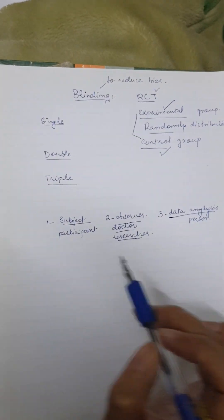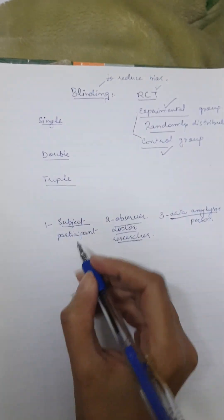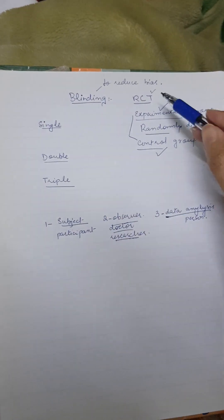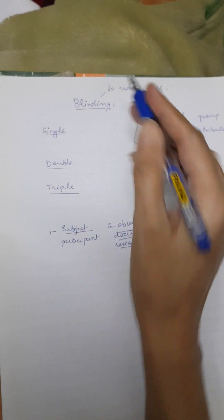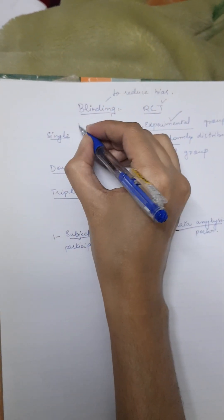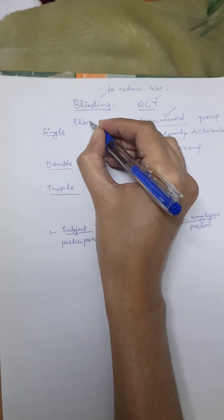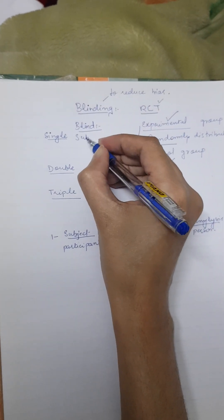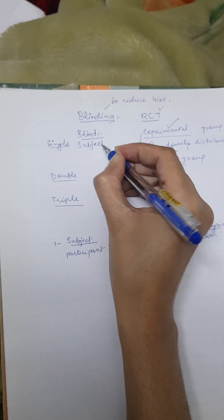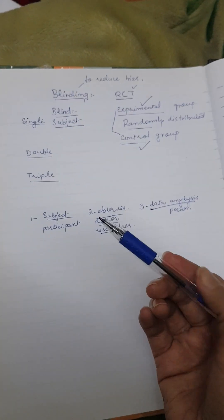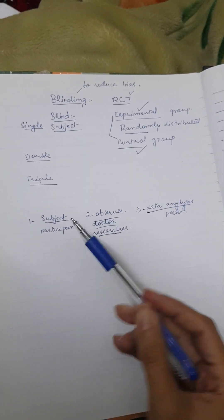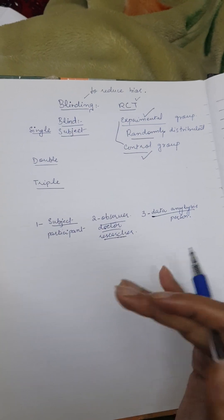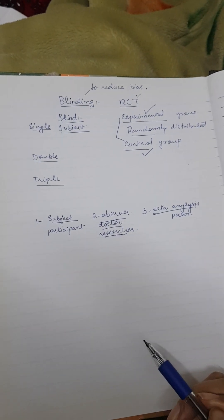Single blinding is in which the subject is unaware. He doesn't know whether he is in the control group or experimental group. In single blinding, only one of these three people does not know what's going to happen. In single blind, the subject just does not have this information that whether he or she is in a control group or experimental group.